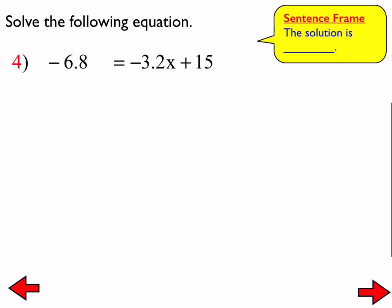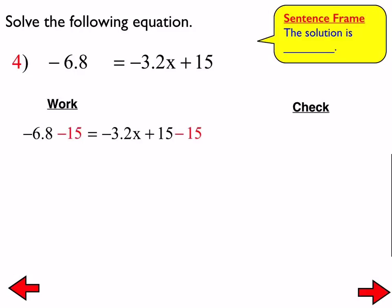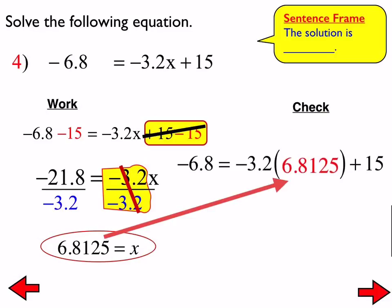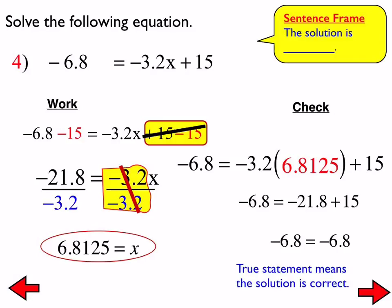For number 4, we needed to subtract 15 from both sides, because that's the inverse operation to adding 15, and we made our 0 there. So now we divide both sides by negative 3.2 — a few of you got bogged down in the division, but at this point we shouldn't be getting bogged down dividing two decimal numbers. We should end up with x equals 6.8125 for the solution, and if we check, it creates a true statement. Someone asked about expressing it as a fraction — 13 over 16 sounds right, yes — and you could also write it as a mixed number.